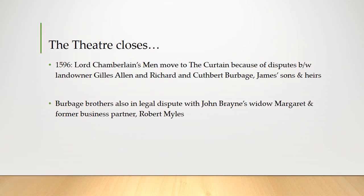The Theater had about a good 20-year run before, in 1596, there was a dispute between Giles Allen the landowner and James Burbage's two sons, Richard and Cuthbert, who were his heirs to his lease on the land — a dispute over how much longer they could use the land for plays. The Burbages were also in a legal dispute with John Brain's widow and his former business partner Robert Miles. In fact, Richard Burbage is reported to have assaulted Robert Miles at one point during their legal troubles. So the Theater essentially becomes vacant in 1596, when the Lord Chamberlain's Men move to the nearby Curtain Theater because of their dispute.